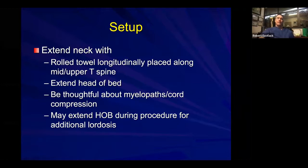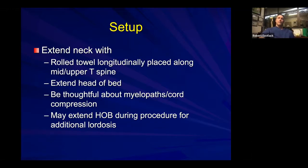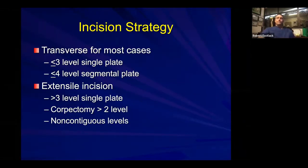Neck extension can be accomplished using a rolled towel or gel pack placed longitudinally in the upper thoracic spine, allowing the neck to fall into extension. You can also extend the head of the bed manually — the anesthesiologist can drop it during the procedure. In a kyphotic cervical spine, extending may not be feasible at the beginning, but as you do your releases, trialing, and maneuvering across one or more segments, you may allow for incremental head-of-bed extension as you release and reconstruct.